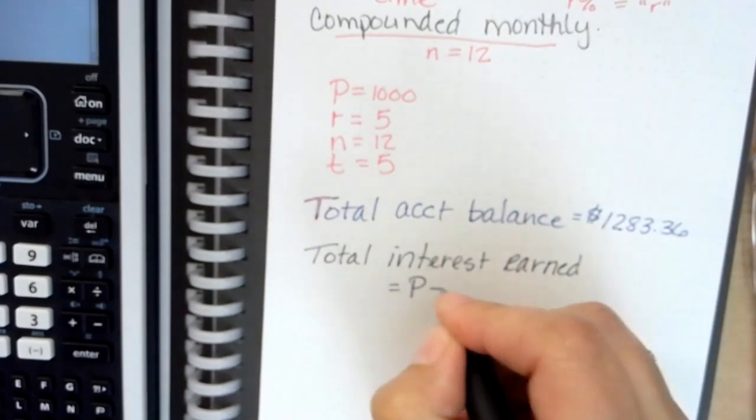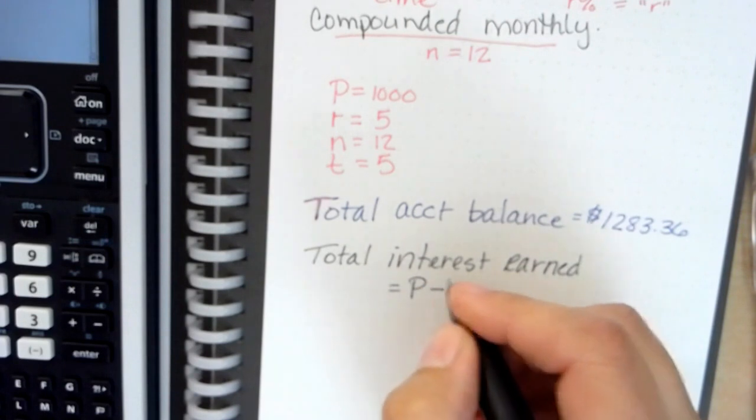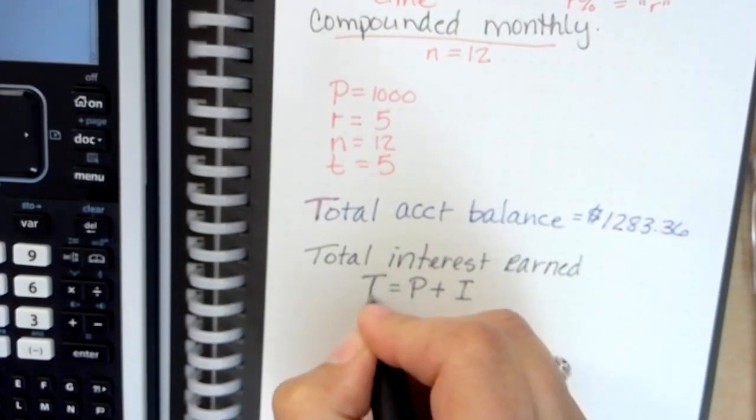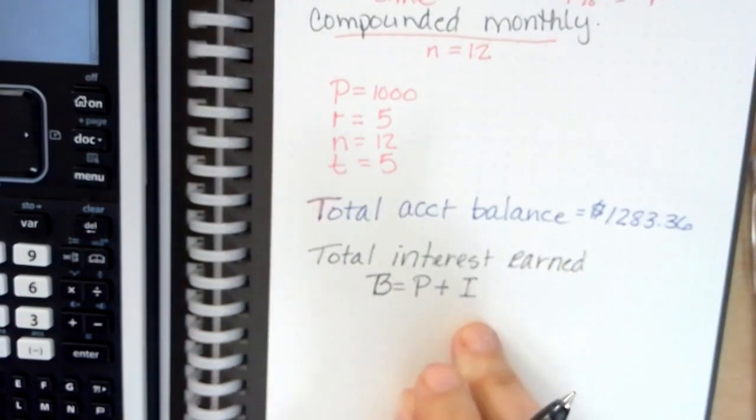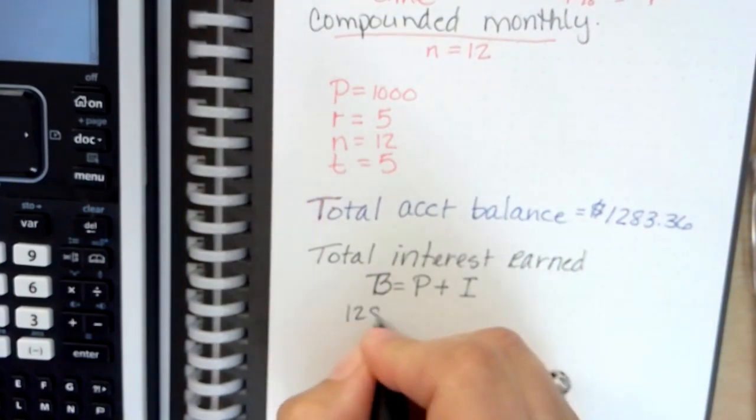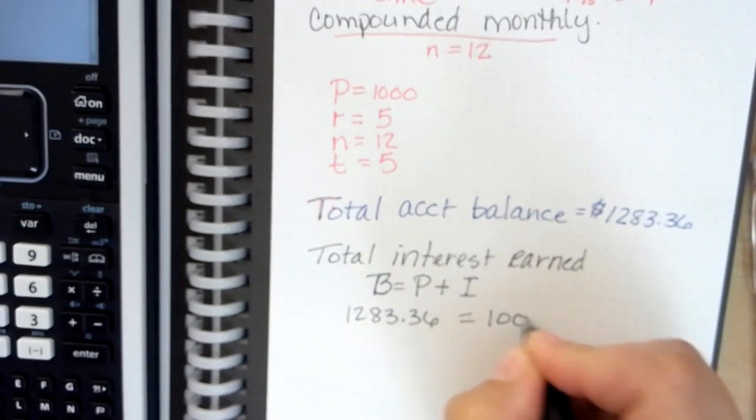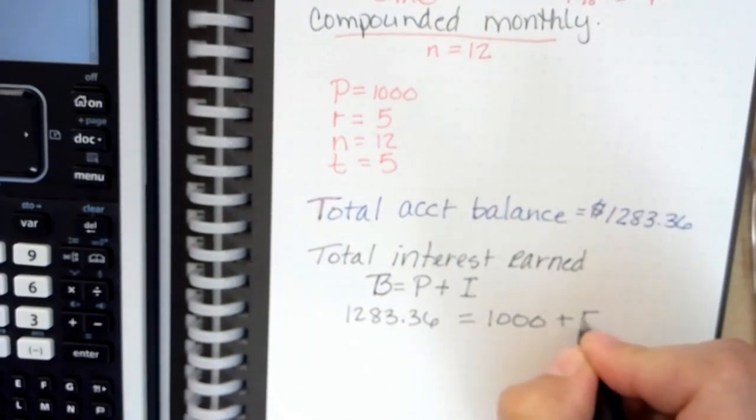P minus, or P plus I equals the total balance, so B equals P plus I. So our balance is one thousand two hundred eighty three thirty six. Our original principle was one thousand, so to find our interest we simply solve for I.